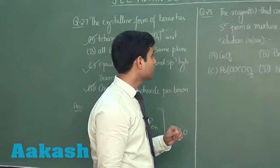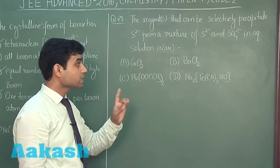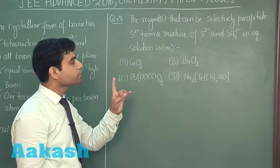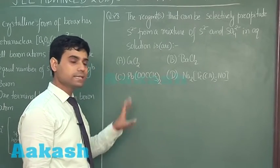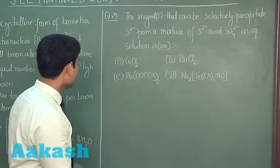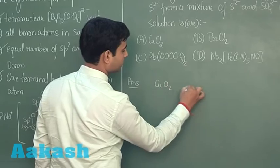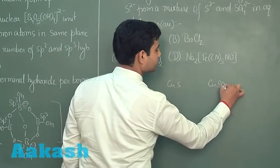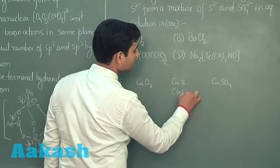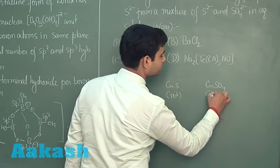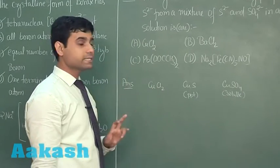Let us move to the next question, question number 28. This question says: the reagent or reagents that can selectively precipitate sulfide from a mixture of sulfide and sulfate in aqueous solution is or are. The four options are CuCl₂, BaCl₂, lead acetate, and sodium nitroprusside. If I talk about CuCl₂, it will give us CuS and CuSO₄. CuS is insoluble and will form a precipitate, while CuSO₄ is soluble. So CuCl₂ can easily selectively precipitate the sulfide ion.